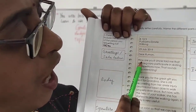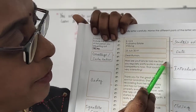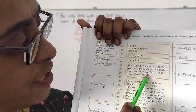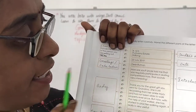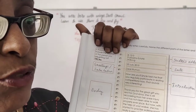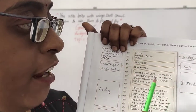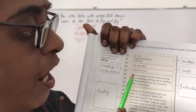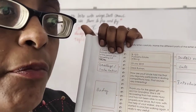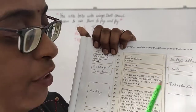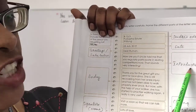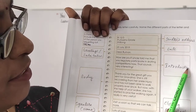'How are you? Uncle told me that you are regularly participating in skating competitions now. That sounds very interesting.' This is the introduction — how you start the first paragraph. You can say 'How are you, I am fine' and mention what someone told you.